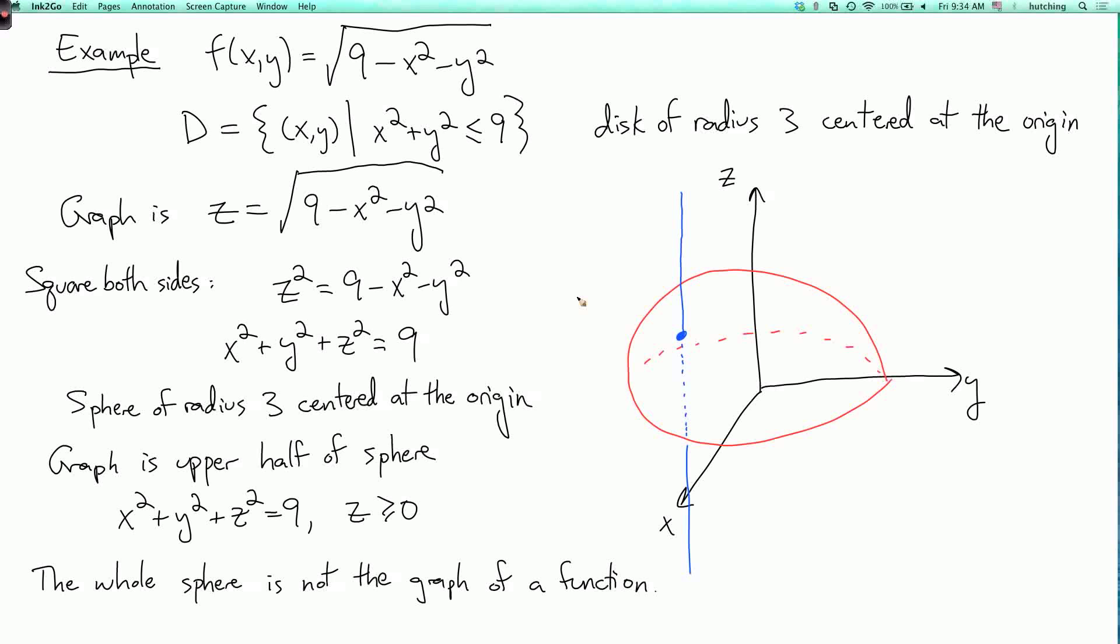So our next example is the function f of xy equals 1 over x squared plus y squared. Now what's the domain of this? Well, this formula is well defined as long as we don't divide by 0. And x squared plus y squared is 0 only at the origin. So the domain is all of R² except the origin. And the fancy notation for this is we have the set R² minus the set consisting of the single point (0, 0).